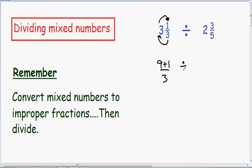And this is all being divided with 2 and 3 fifths. So let's do the same thing with that mixed number. We've got to change it into an improper fraction. Since 2 and 3 fifths has a denominator of 5, the improper fraction is also going to have a denominator of 5.